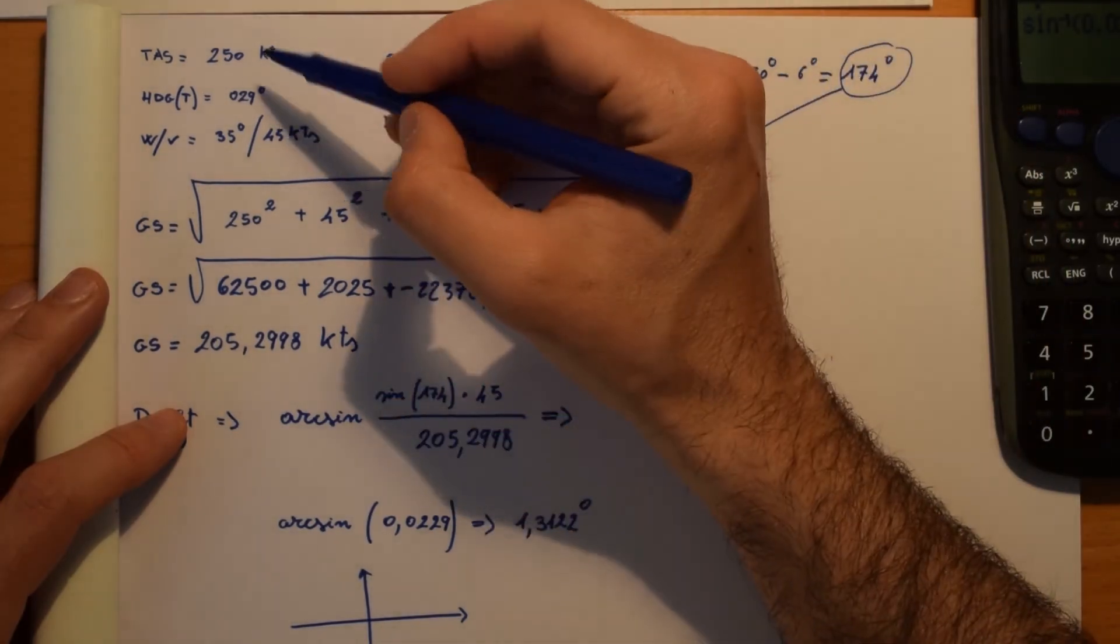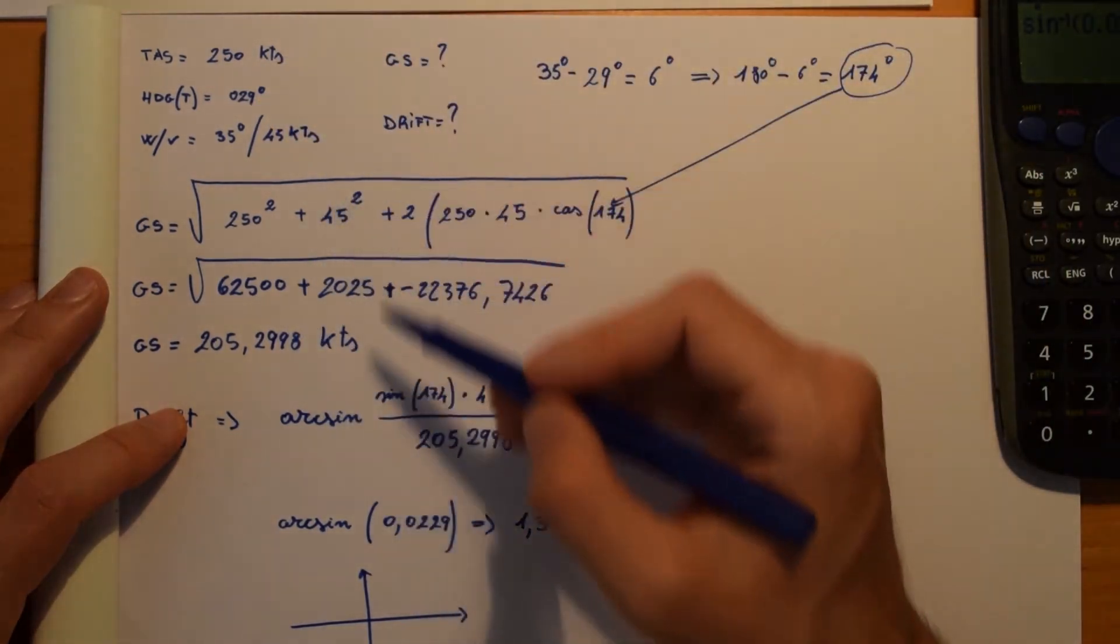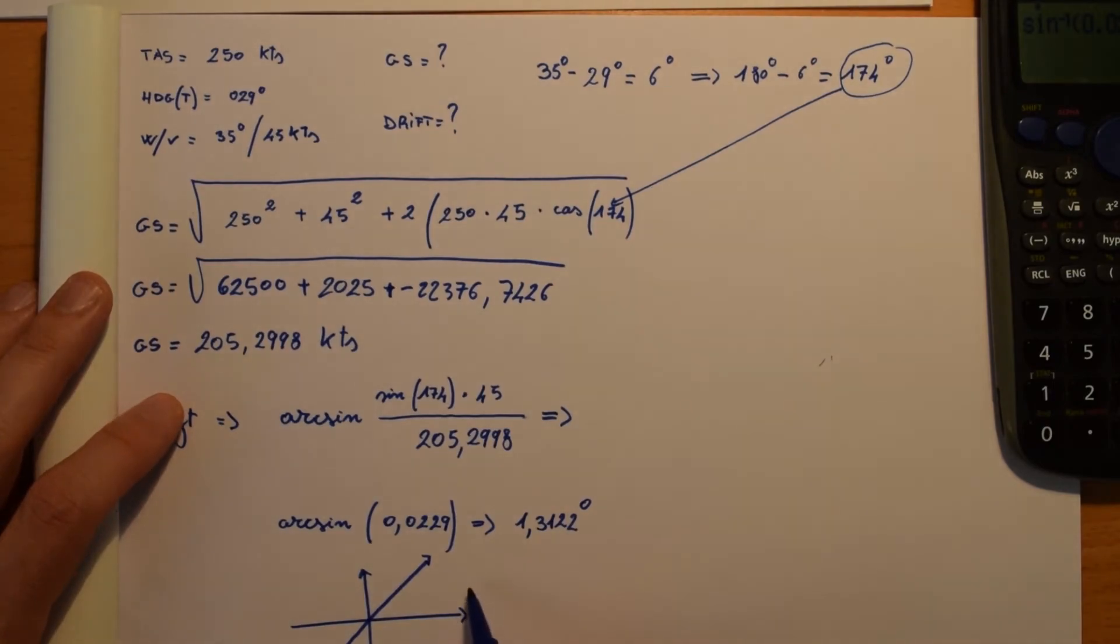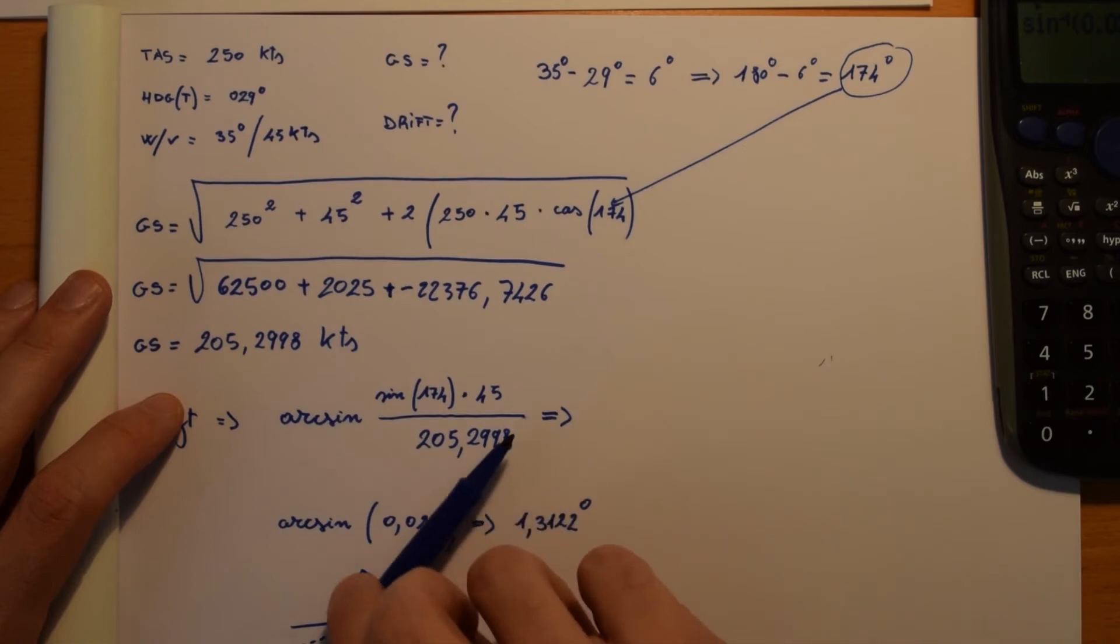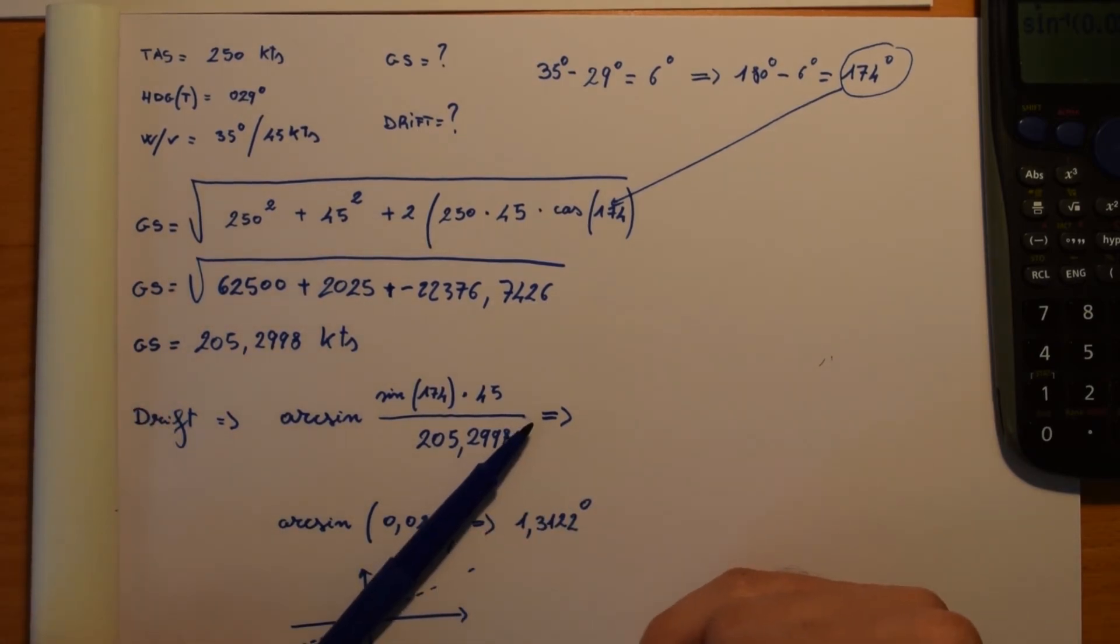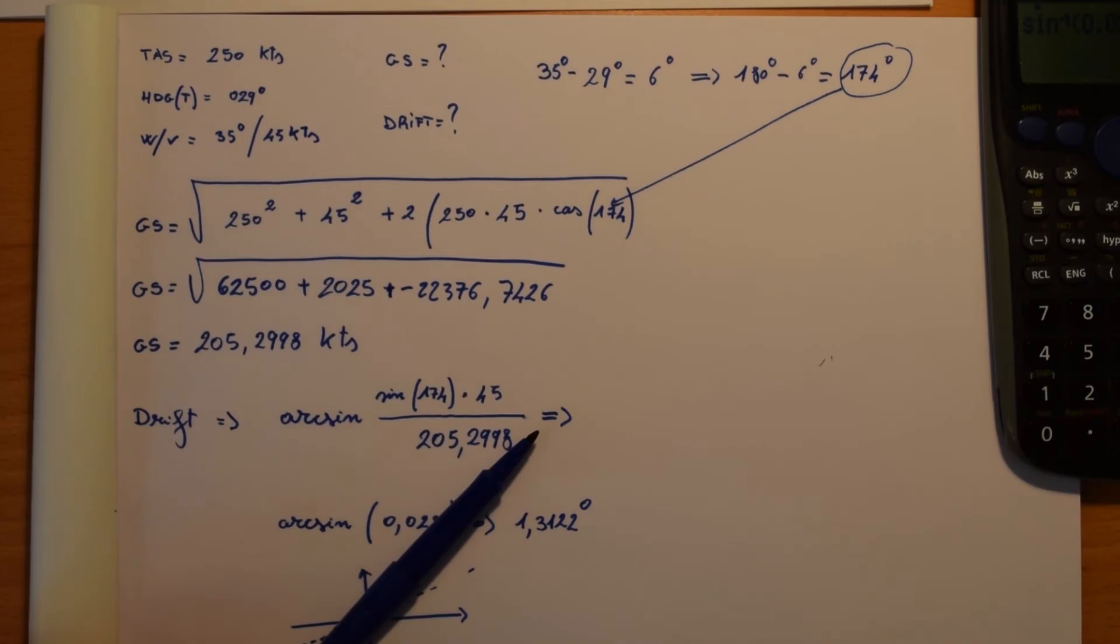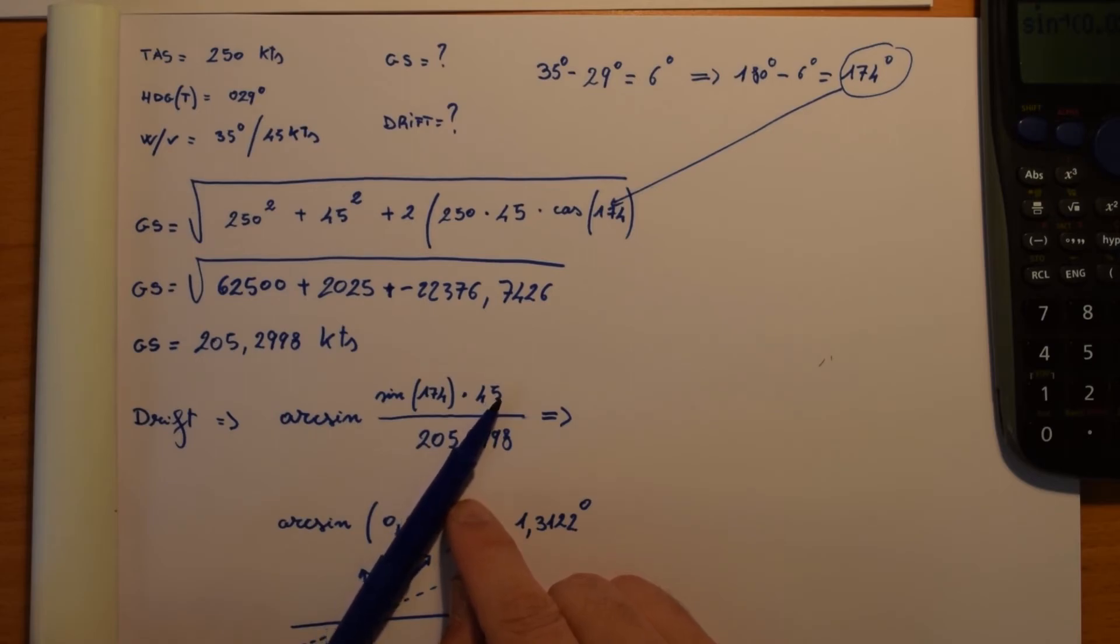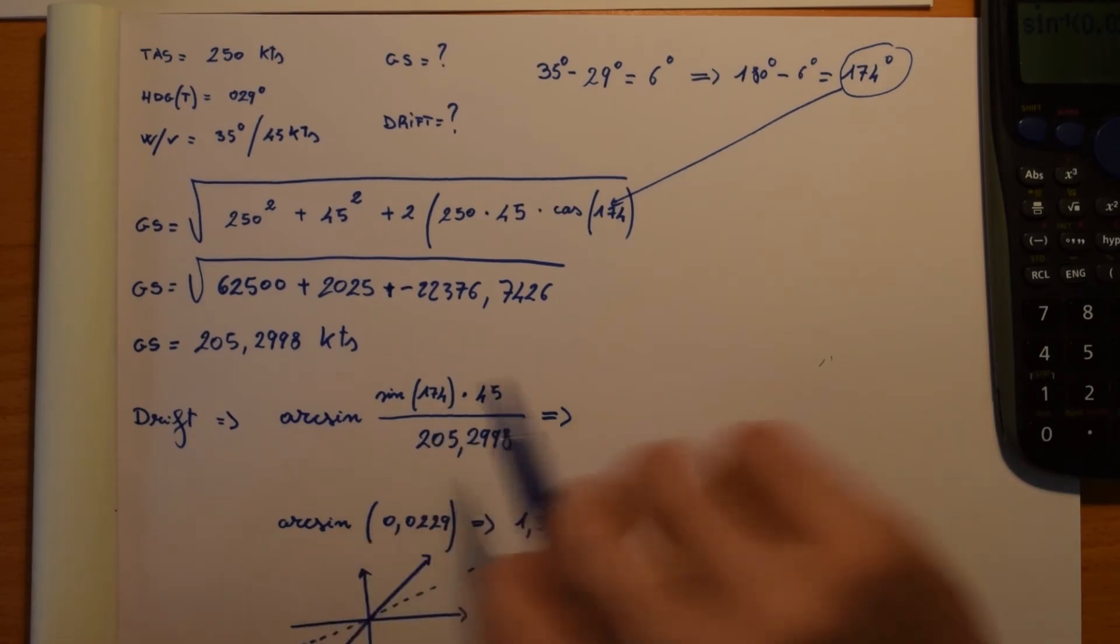So here we go. Now we know that our heading is going to be 29, so 29 is more or less like this. And our wind vector is 35, so more or less is like this. If our true heading is this one and the wind is coming from our right side, the drift will be left because our aircraft is going to move to the left because of the wind. So in this case, it is left.